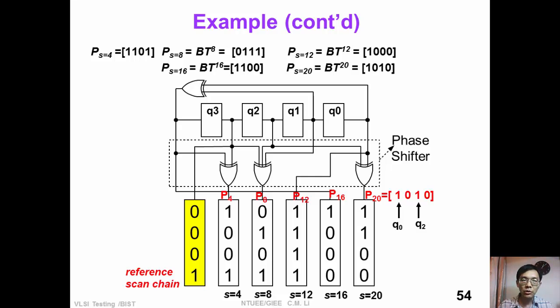If we want more scan chains, we can do the same thing to the other scan chain. And we can design P is equal to 8, P is equal to 12, and P is equal to 20.